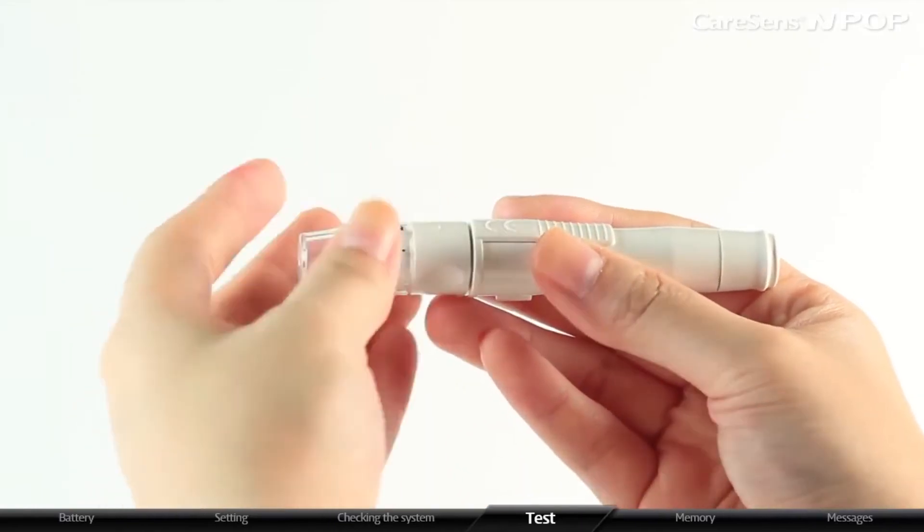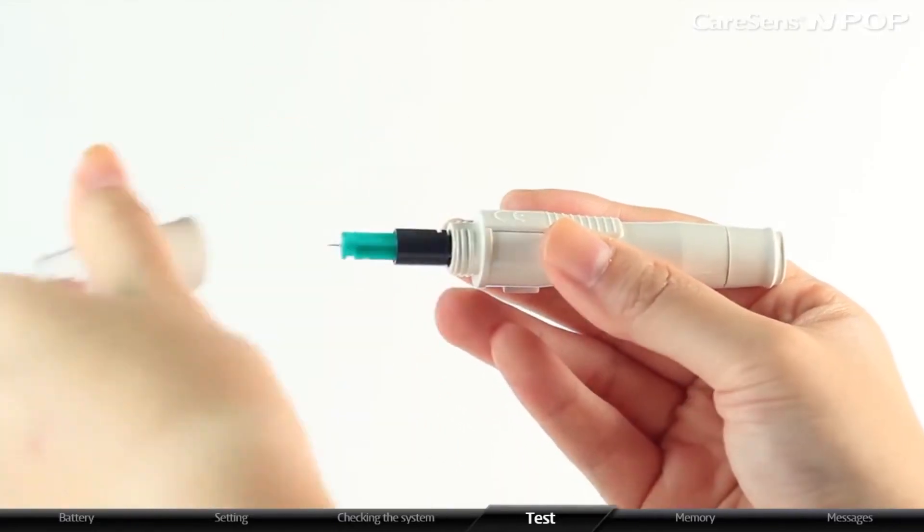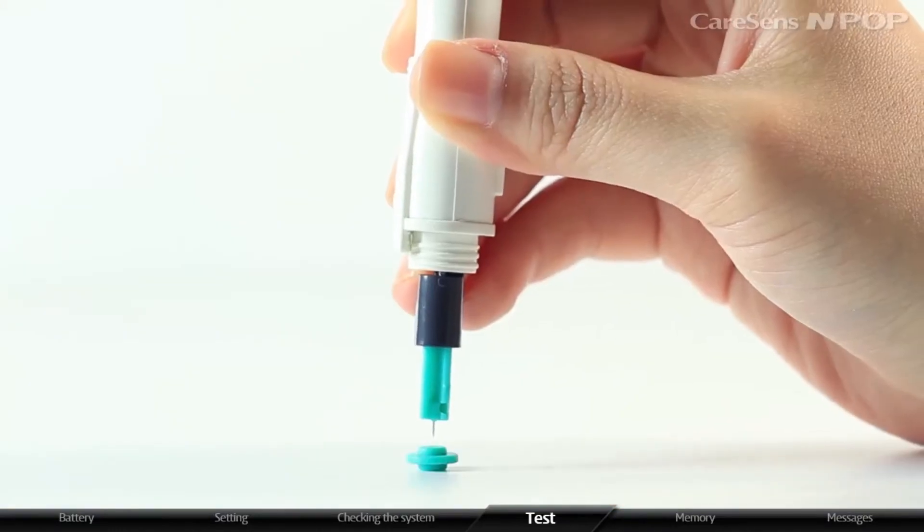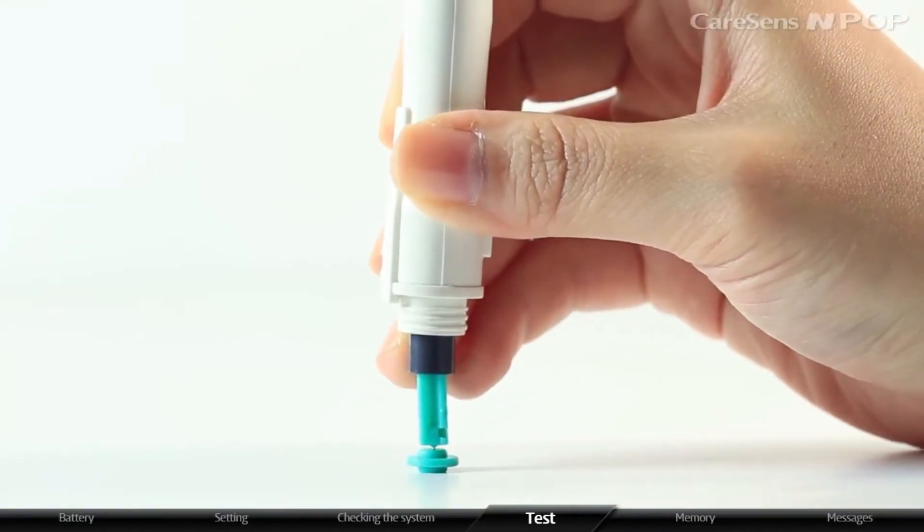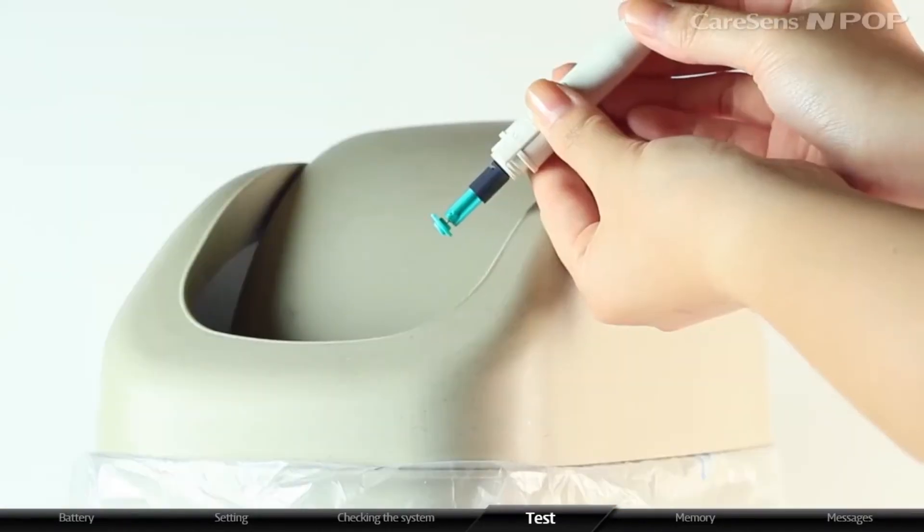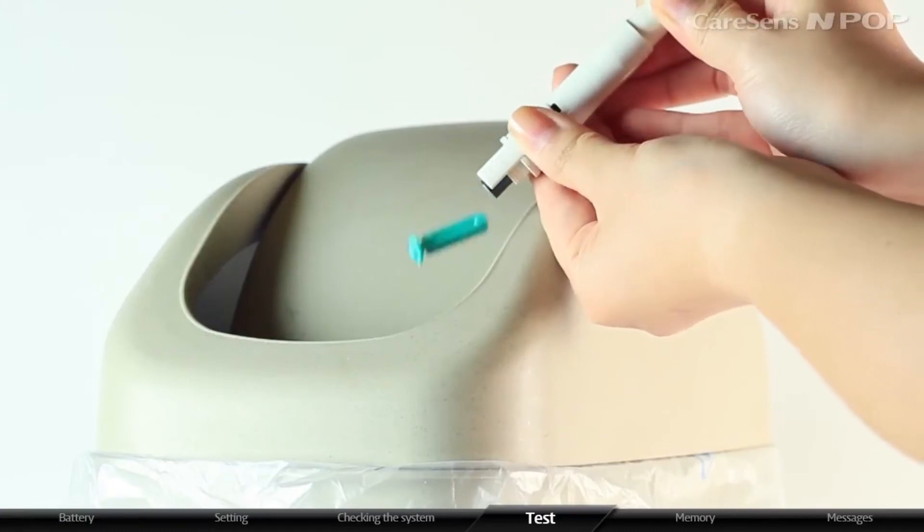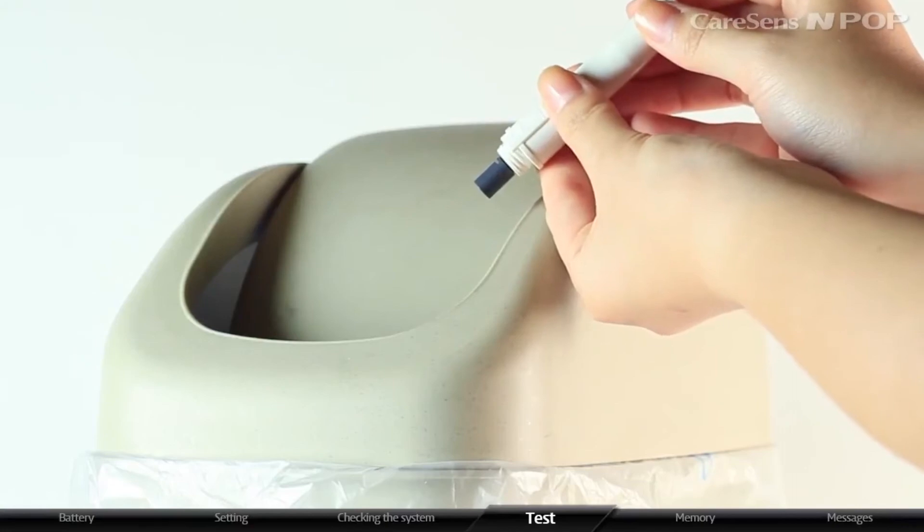After completing the test, unscrew the tip to open the lancing device and place the protective disc on the lancet. You can remove the lancet from the lancing device by pulling the sliding barrel and pushing the lancet ejector button forward simultaneously.